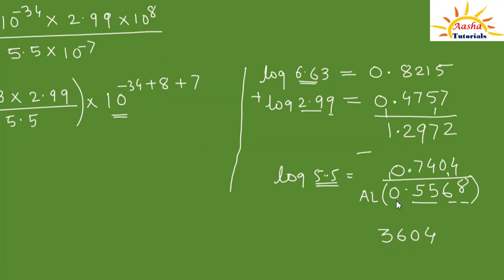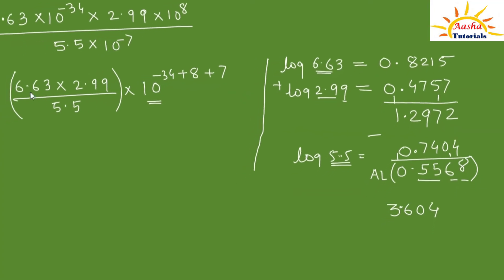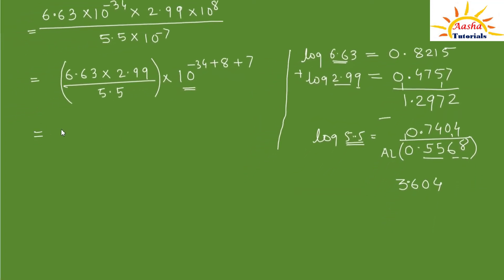Adding 1 to the characteristic 0 gives positive 1, so the decimal goes after 1 digit: the number part is 3.604. The power part: 8 plus 7 is 15, and −34 plus 15 is −19. So the final answer is 3.604 × 10⁻¹⁹.